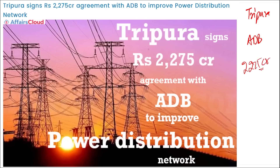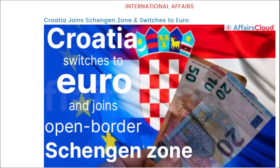Asian Development Bank 2275 करोड़ रुपये त्रिपुरा को provide करेगी ताकि अपना power distribution network को सुधार सके — power distribution network में advancement और development लाने के लिए, किसी दिक्कत को ठीक करने के लिए, और घर-घर तक बिजली पहुँचाने के लिए। यह agreement sign किया गया 2275 करोड़ रुपये का त्रिपुरा ने Asian Development Bank के साथ।